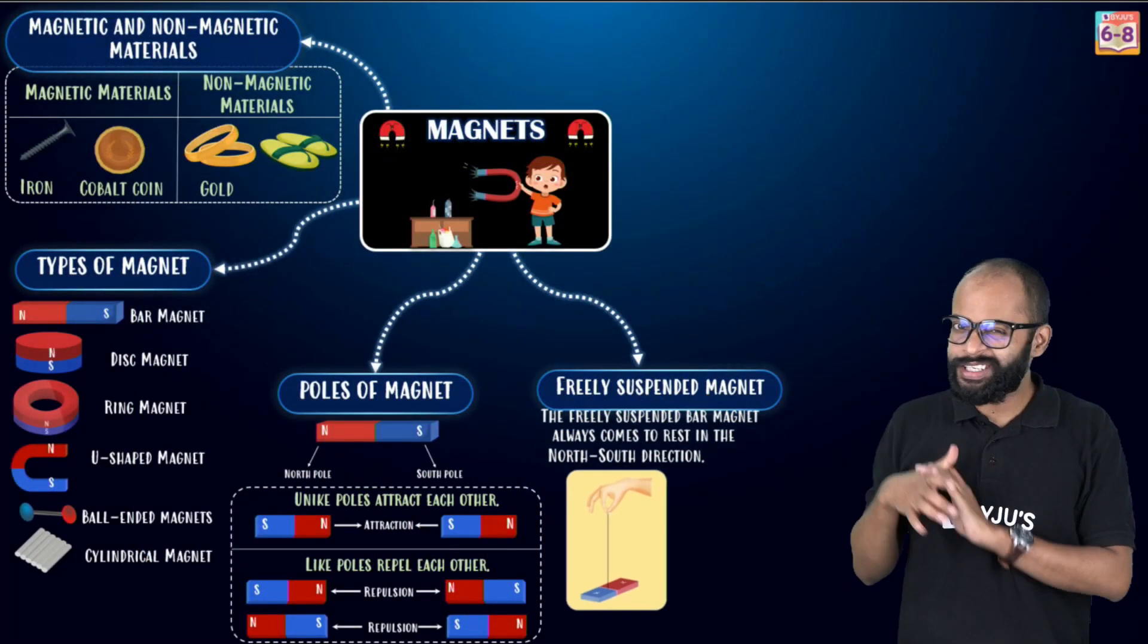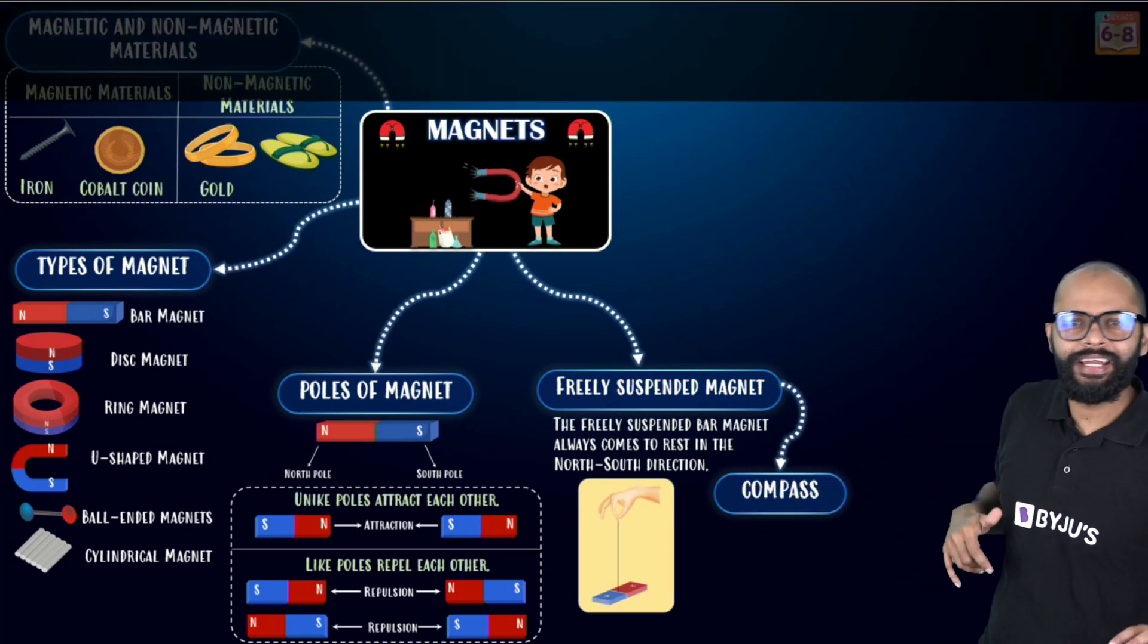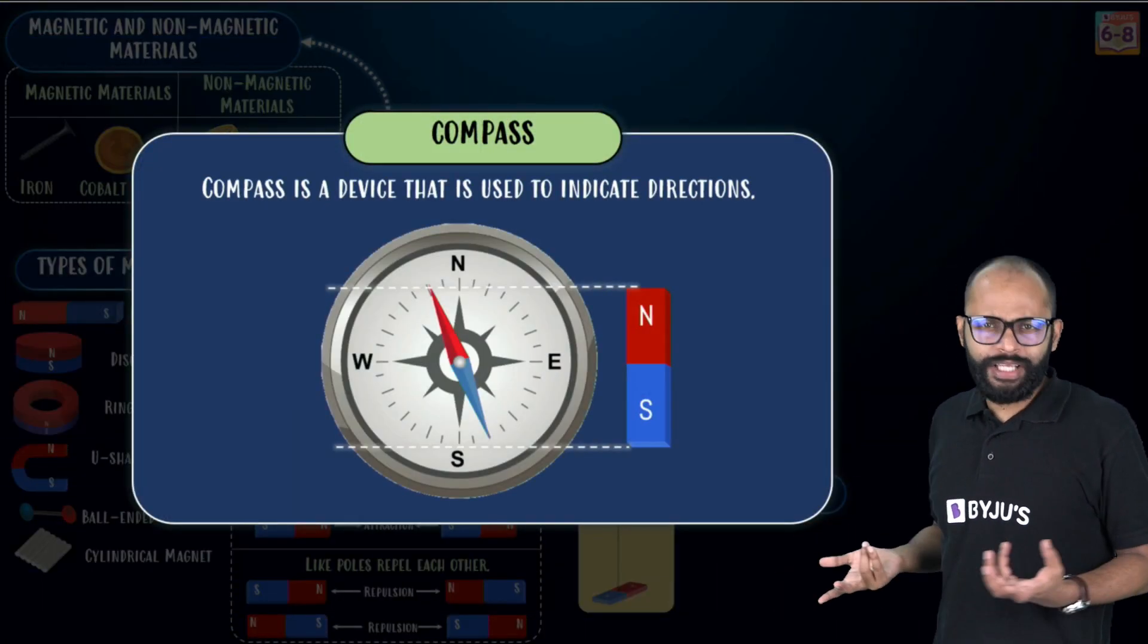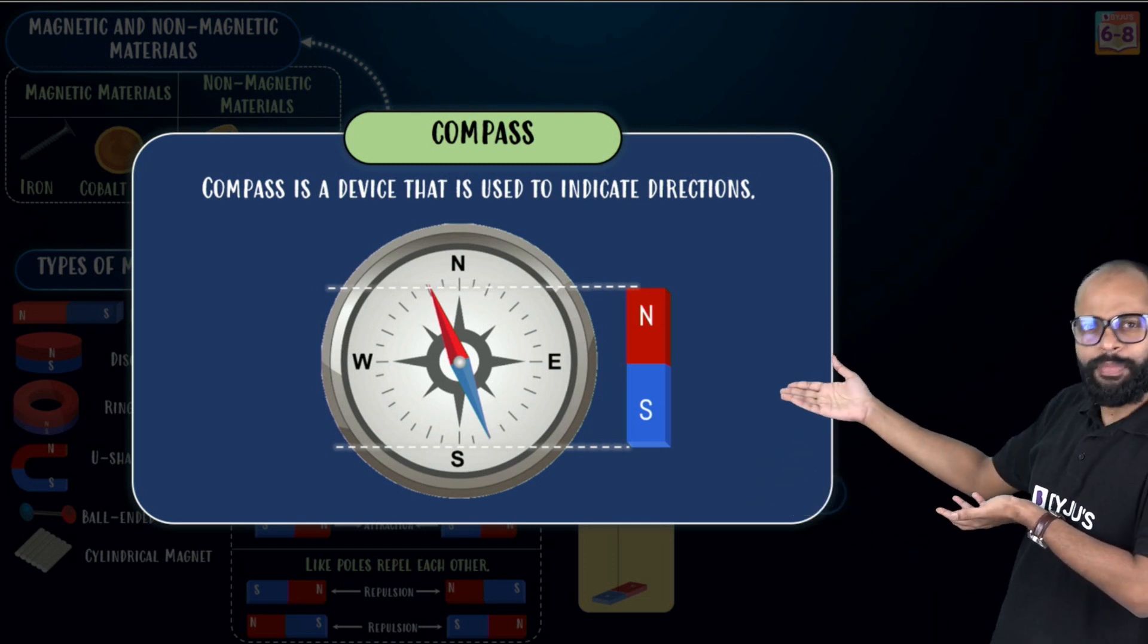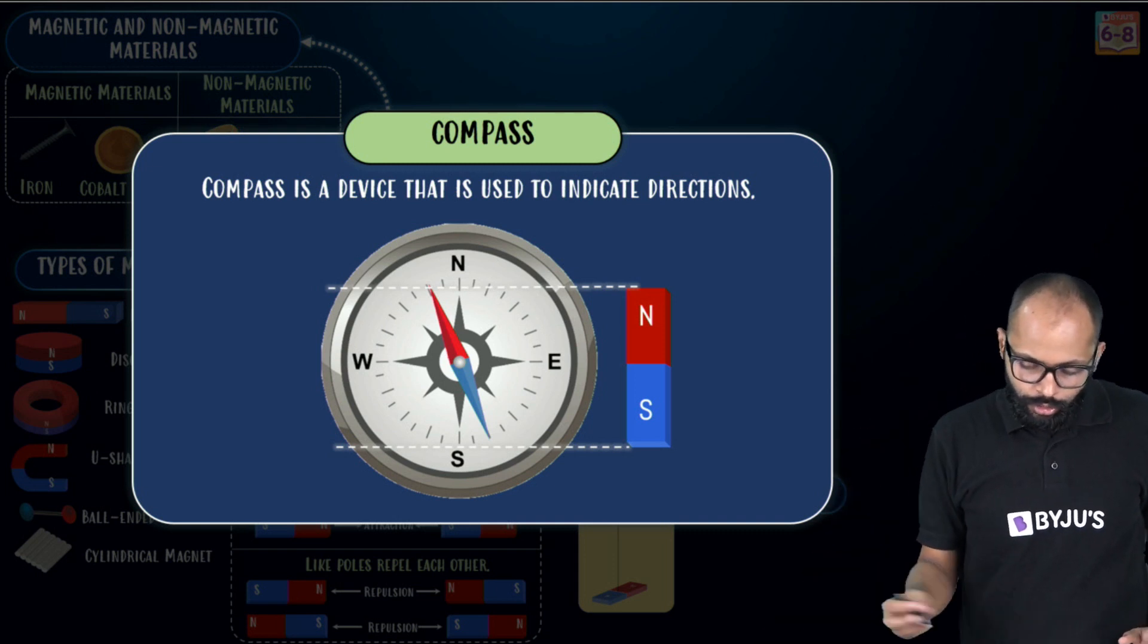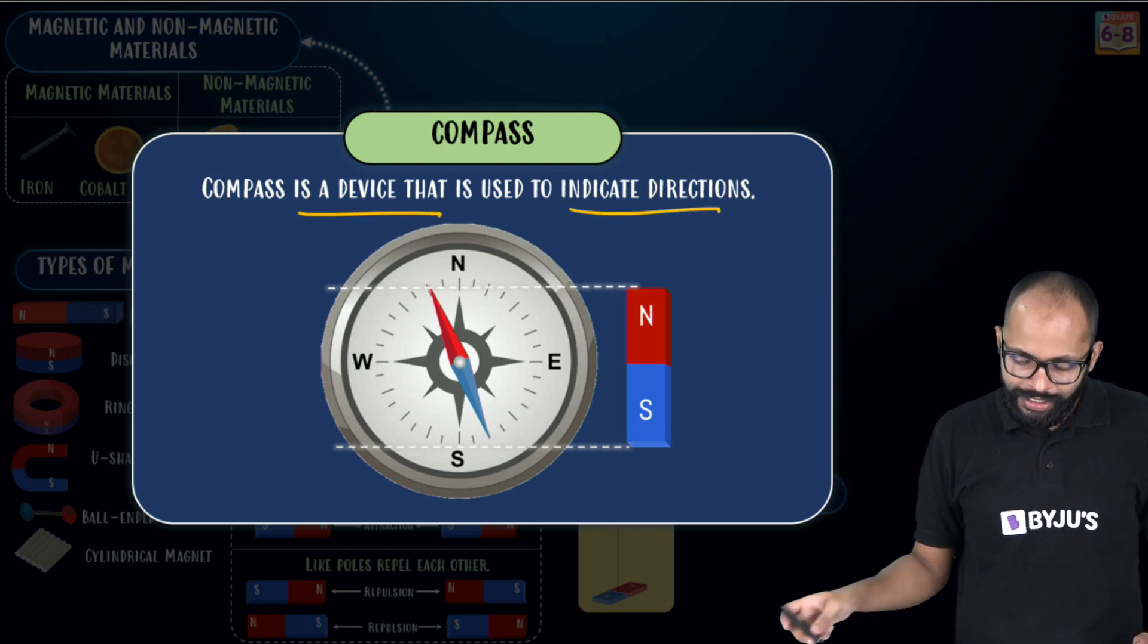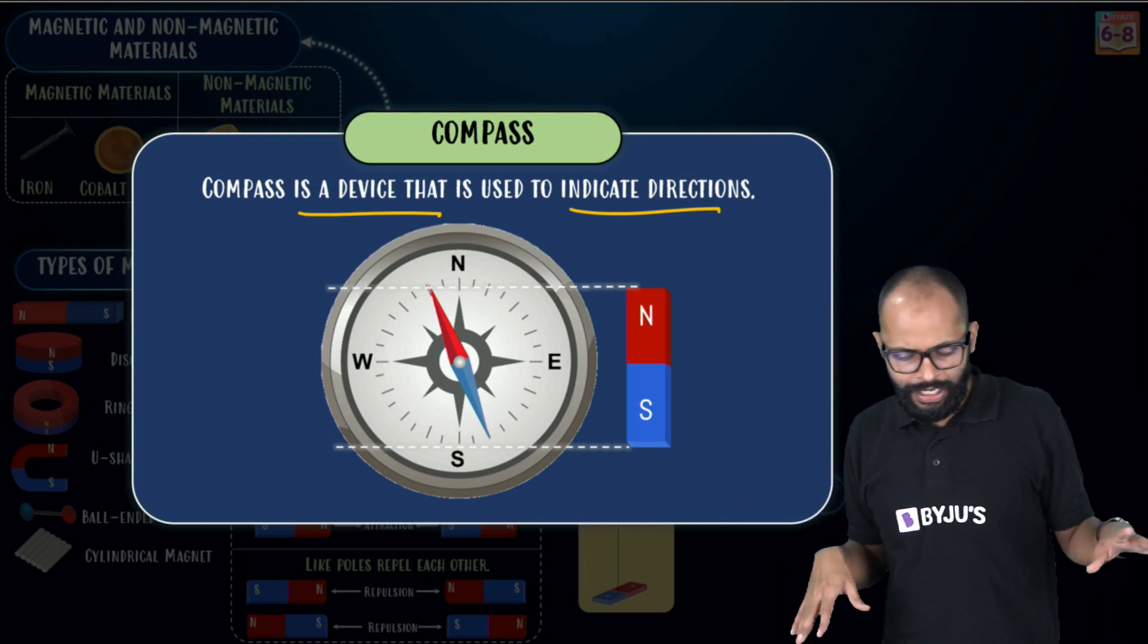Alright. And where is it used? Where is this thing used? Compass. Right? Compass, we all know. What is the compass? It's like a small magnetic needle only. Look at this. It's just a bar magnet. Kind of a bar magnet inside a proper casing. A fancy casing. So compass is the device that is used to indicate directions. Same thing. Same concept. Nothing else.